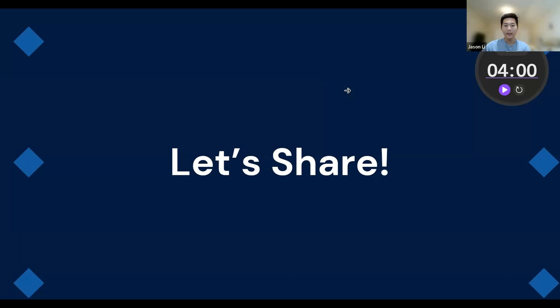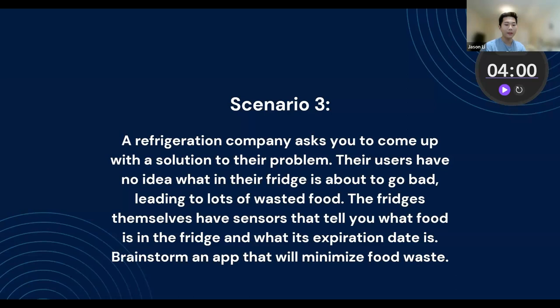Let's move on to the third and final one. For scenario three, a refrigeration company asks you to come up with a solution to their problem. Their users have no idea what in their fridge is about to go bad, leading to lots of wasted food. The fridges themselves have sensors that tell you what food is in the fridge and what its expiration date is. Brainstorm an app that will minimize food waste. Going through every single item in your fridge and checking when it's about to go bad takes up a decent chunk of your time. What they're asking is come up with an app that notifies users what foods are close to going bad and encourages users to use food that's about to expire.